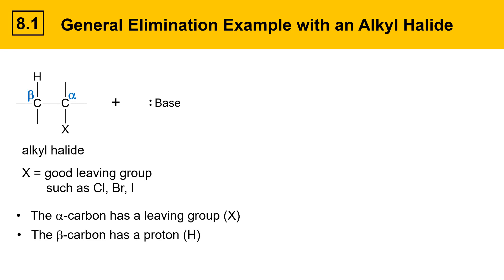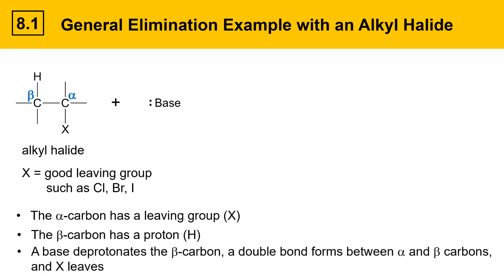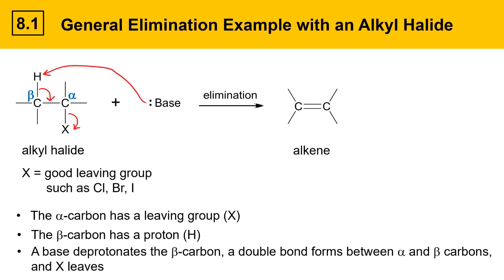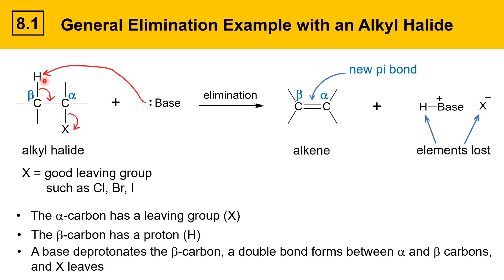When an alkyl halide like this is put in with a base, the base can deprotonate the beta position and a double bond then forms between the alpha and beta carbons as X leaves. The base grabs the beta proton. The electrons in the bond between the beta carbon and the hydrogen go to be shared between the alpha and the beta position, and the leaving group leaves. Those three pairs of electrons moving gives an elimination reaction, which gives an alkene with a new double bond between the alpha and the beta position. There's a new pi bond, and acid-base products are produced from the base pulling the proton off. The elements of H and X are lost from the starting material.